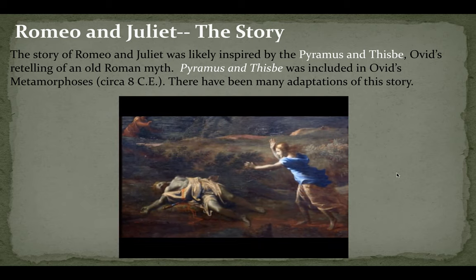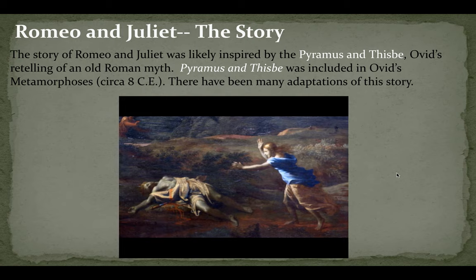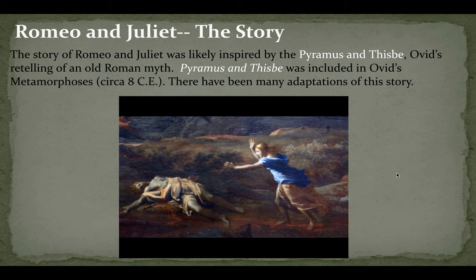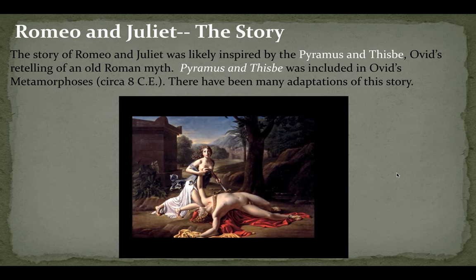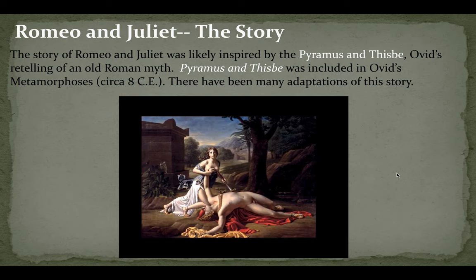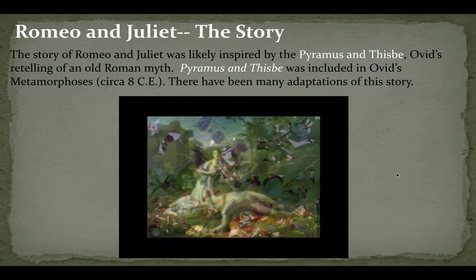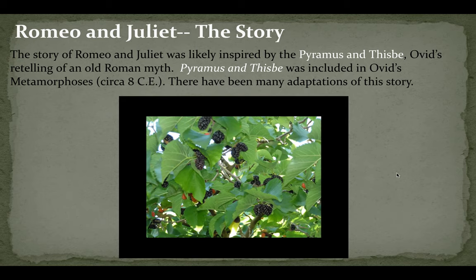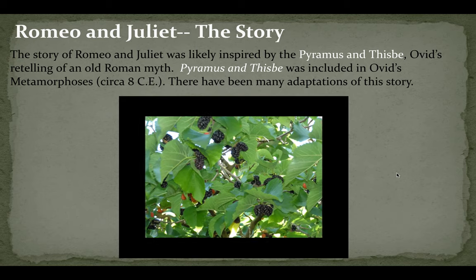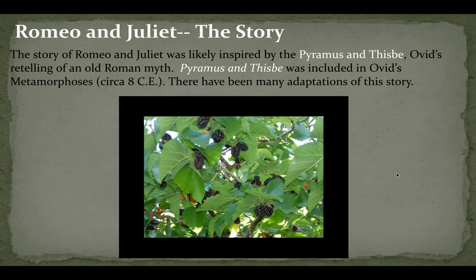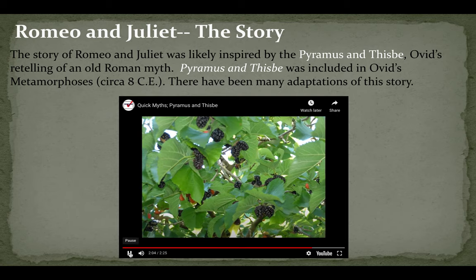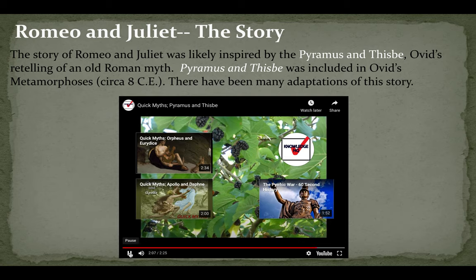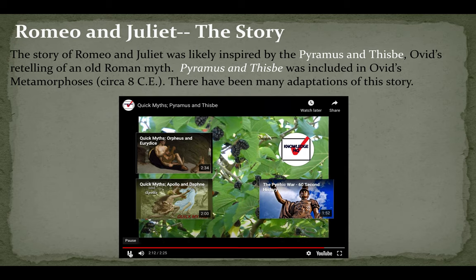Returning from hiding in the cave, Thisbe saw what had befallen her lover. Moaning in agony, she took the bloody sword and fell upon it, asking the gods that their love be remembered. To mark their sad, unrequited love, the gods forever made it so that the fruit of the mulberry tree always turns dark purple when it becomes ripe. The myth of Pyramus and Thisbe may sound quite familiar if you've ever read Romeo and Juliet, as Shakespeare's play draws heavily from this myth as recounted by the Roman poet Ovid.